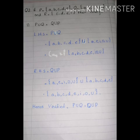Our answer for P union Q is: A, B, C, D, E, I, O, U. We write our answer in ascending form. This is our left-hand side answer for P union Q.